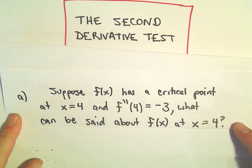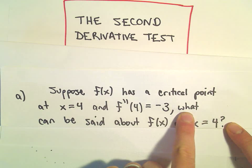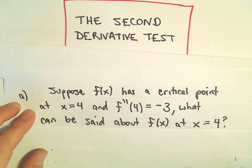So suppose our function f(x) has a critical point at x equals 4 and the second derivative at 4 is negative. We want to know what can we say about our function at x equals 4.